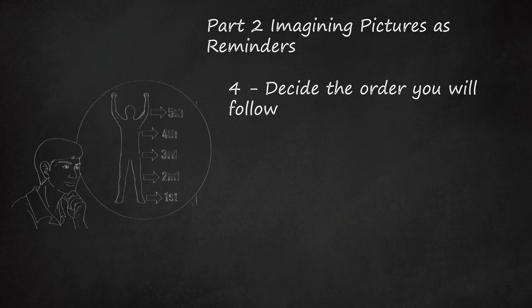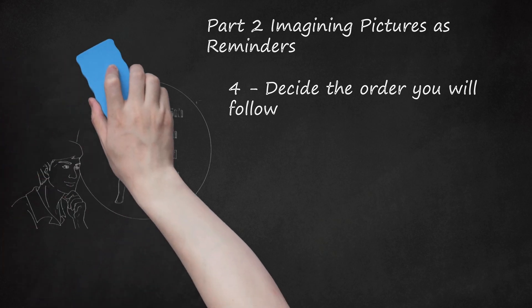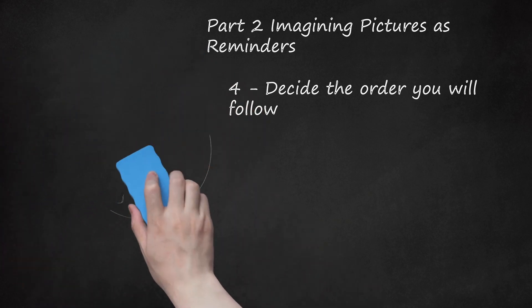Let's say you have 10 points. You can begin at your feet, move to your knees, then your thighs, next to your hips, ribs, shoulders, neck, ears, head, and finally eyes.